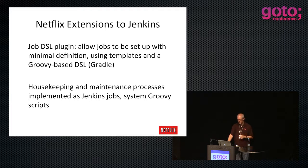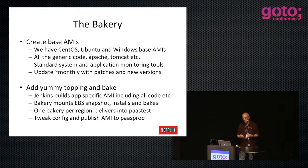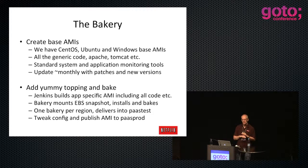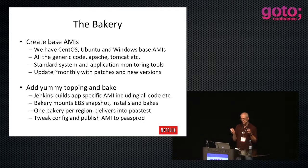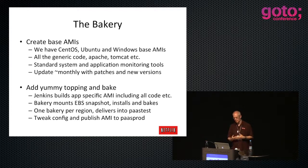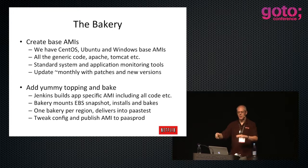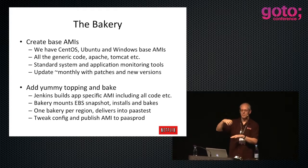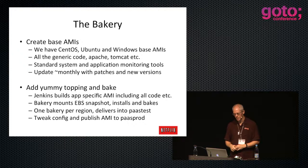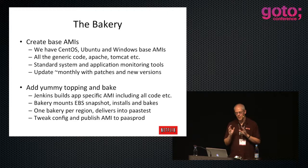The bakery creates base AMIs. About once a month we create a new base AMI containing all the latest patches and built-in monitoring tools. Everything you build is installed on top of that base AMI - it's got Tomcat, Apache, and all that. The build process takes the base AMI and drops in your WAR file or whatever, mounts an EBS snapshot, installs and bakes it, and it bakes into test. All our build system produces AMIs that go to test.